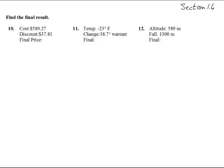Here we are in section 1.6 with the answers to number 10 through 12. So here we have a cost, and then we have a discount. Discount means subtraction, so we are 589.27, subtract 37.81.